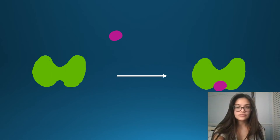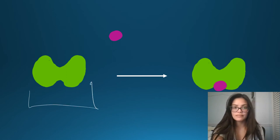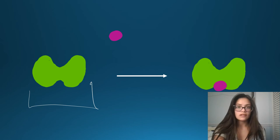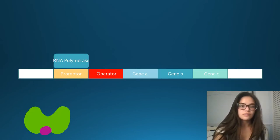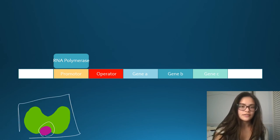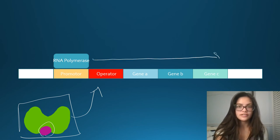In order to stimulate transcription, we need our regulatory protein or activator protein to bind to the operator. However, before this happens, we need our small effector molecule to bind to our activator protein, and then it can bind to the operator, which will induce transcription. This is positive inducible. You can see the small effector molecule and the activator protein bind to the operator, allowing RNA polymerase to transcribe all the way down the DNA and transcribe all of the structural genes into proteins.